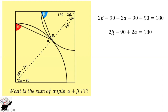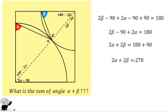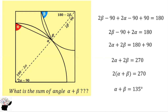Now we group the terms: 2 beta and 2 alpha, then add 90 to both sides. So 2 alpha plus 2 beta equals 180 plus 90, which is 270. Now we factorize 2 out: 2 times (alpha plus beta) equals 270. We divide both sides by 2, and the answer is 135 degrees. So alpha plus beta equals 135 degrees.